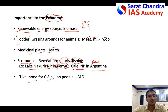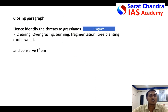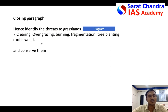Overall, nearly one billion people depend on grasslands, so it has great economic importance. You can conclude the answer — generally for any answer regarding forests, grasslands, or any ecosystem-related questions, you can conclude by talking about a few threats to the ecosystem.